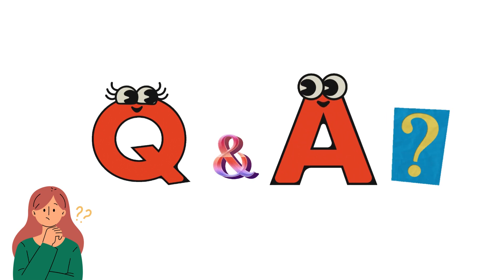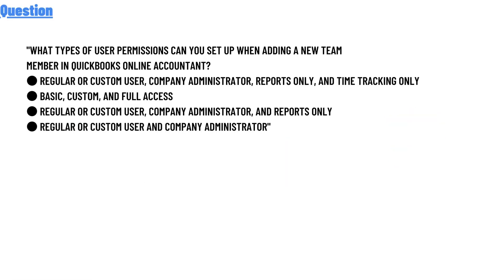Our today's question is: what types of user permissions can you set up when adding a new team member? In QuickBooks Online, the options are: regular, custom users, company administrator, reports only, and time tracking — so only basic, custom, and full access.